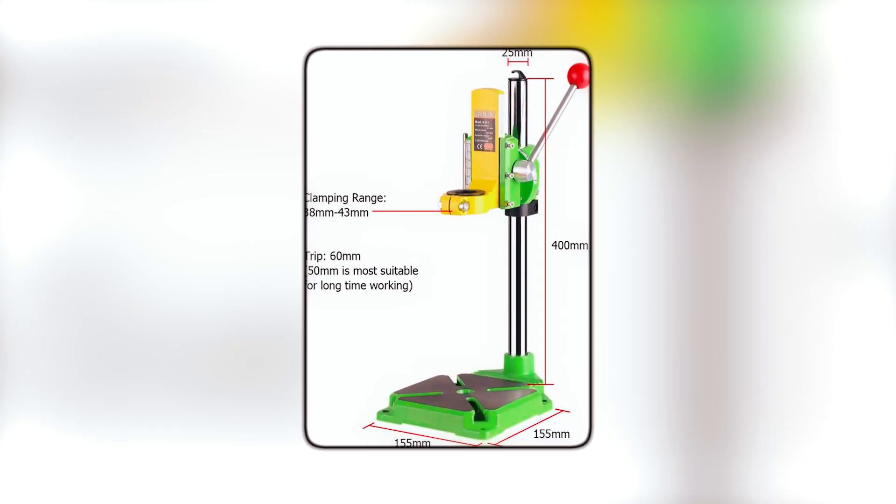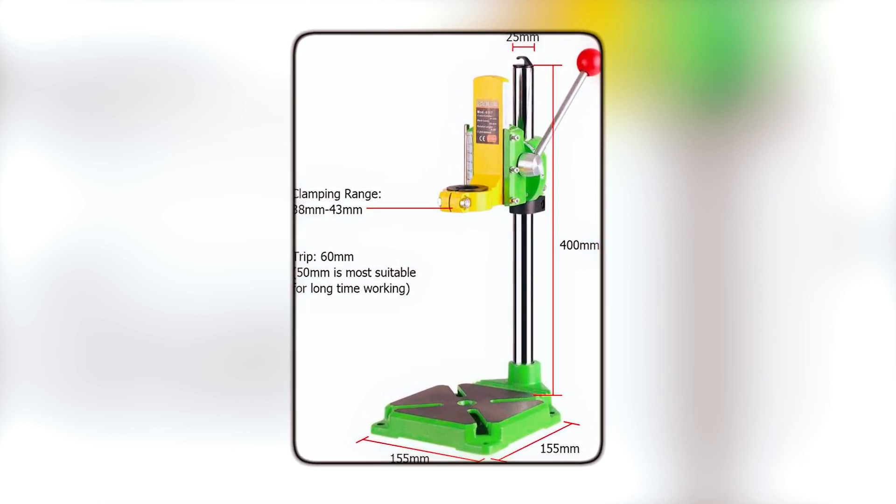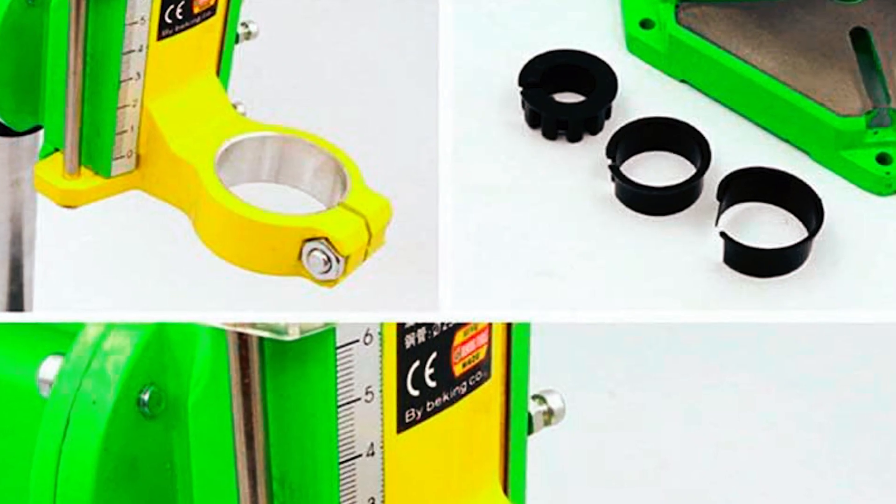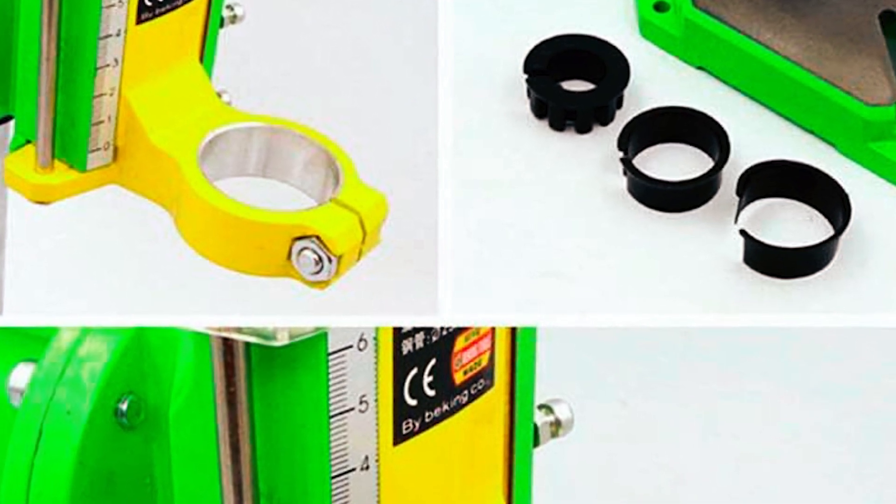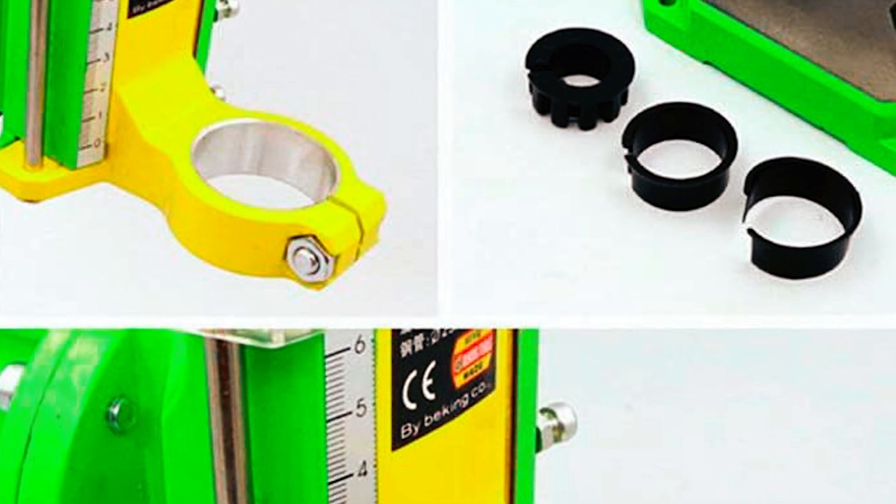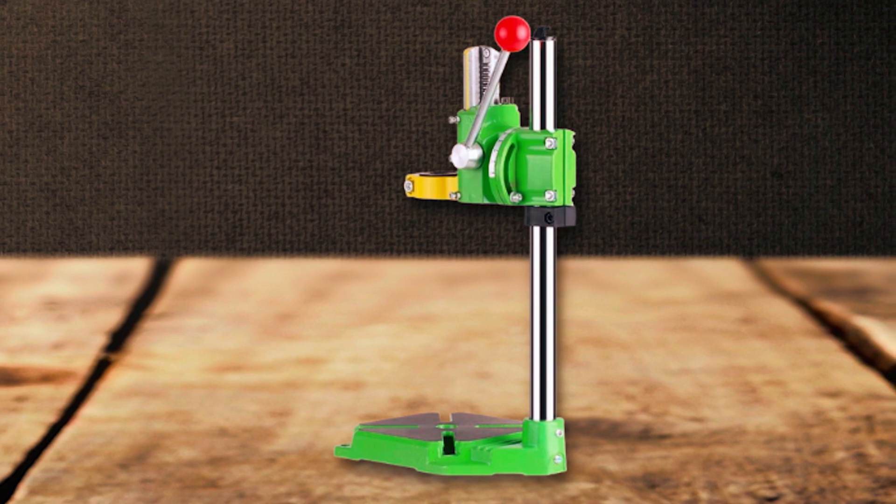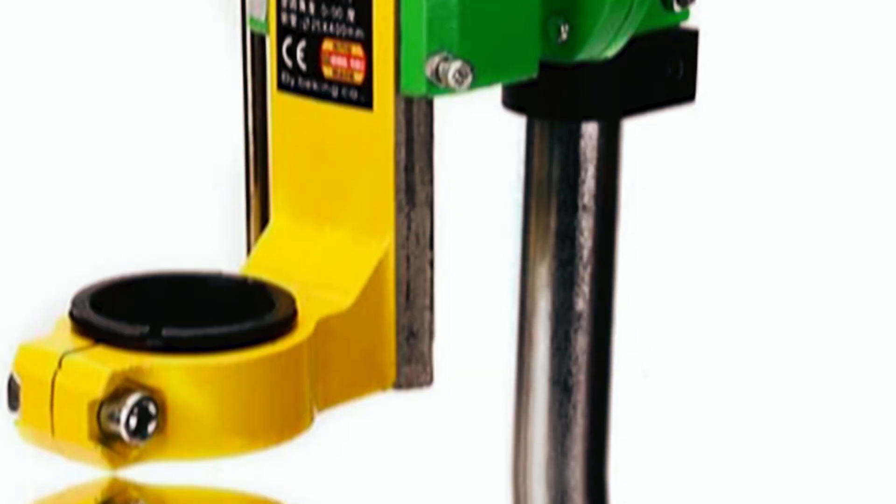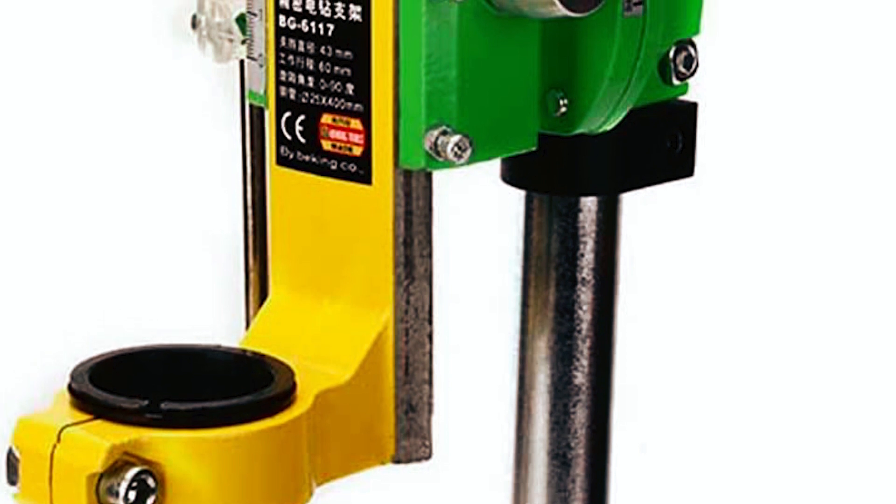Moreover, it has separate adjustments for drill height and press depth, ensuring minimal risk of over-drilling into the stand. Additionally, the drill collar is adjustable to fit various tools and comes with three different-sized inserts to accommodate smaller drills. The sturdy column bar and base with four clamping points make it easy to mount the stand to your work table, while the depth adjustment scale and stop with adjustable scale ring ensure accurate drilling depth.